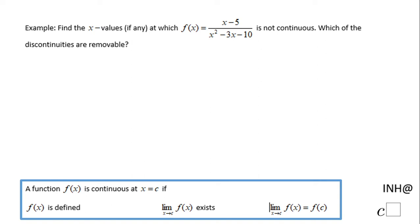Welcome or welcome back to I Need Help at Cisco. In this example, we need to find the x-values at which this function is not continuous. This function is a rational function.